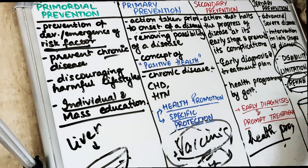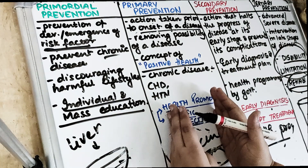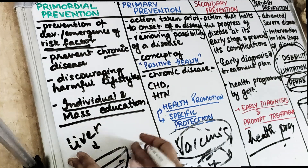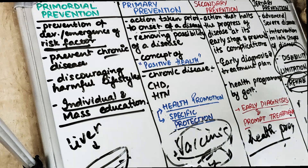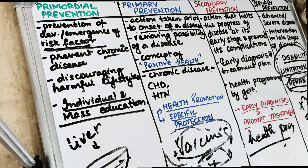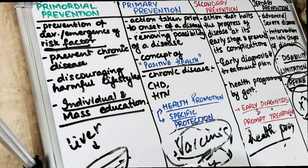These are the levels of prevention — primordial, primary, secondary, and tertiary. Primordial is before the risk factor — preventing the risk factor from emerging. Primary is preventing the disease from occurring. Secondary is preventing the severity of the disease. Tertiary is when we don't want the patient to be bedridden or have their normal activities hampered. For example, if a patient has no teeth, they are disabled because they cannot eat properly — rehabilitating them comes under tertiary level of prevention.